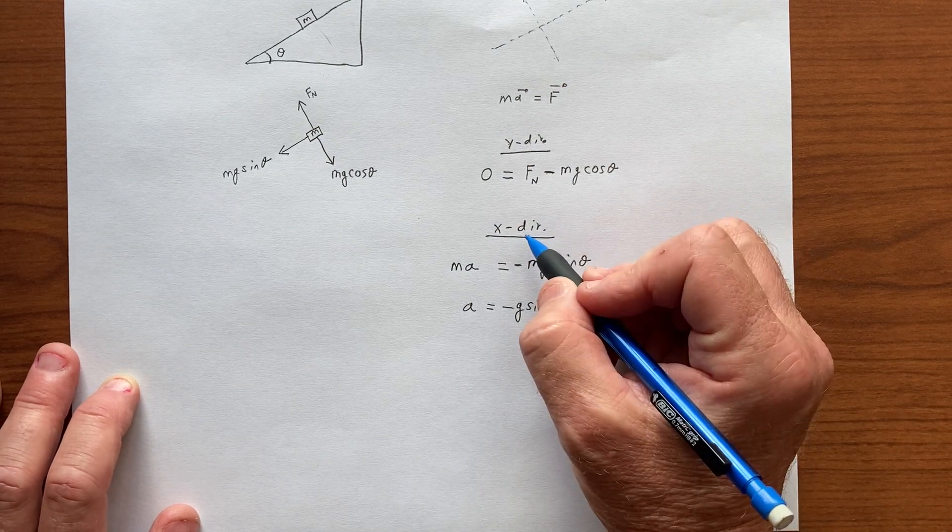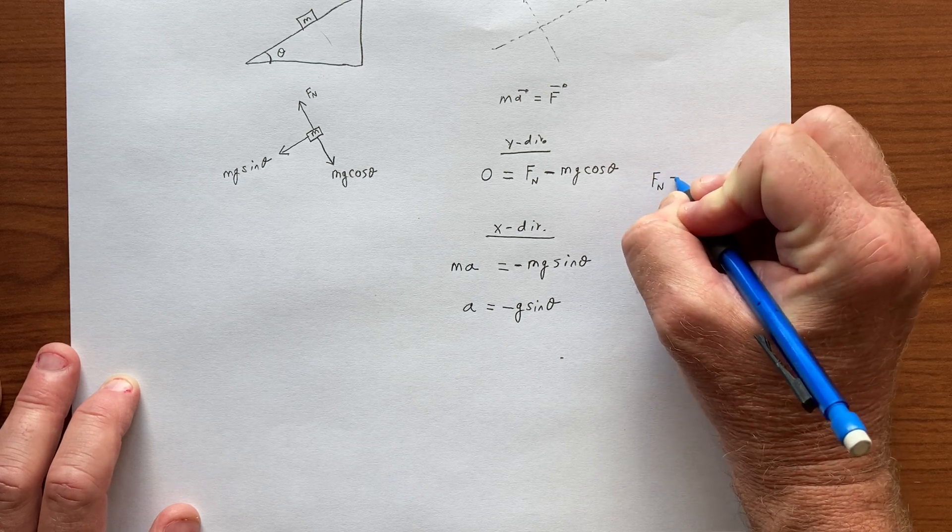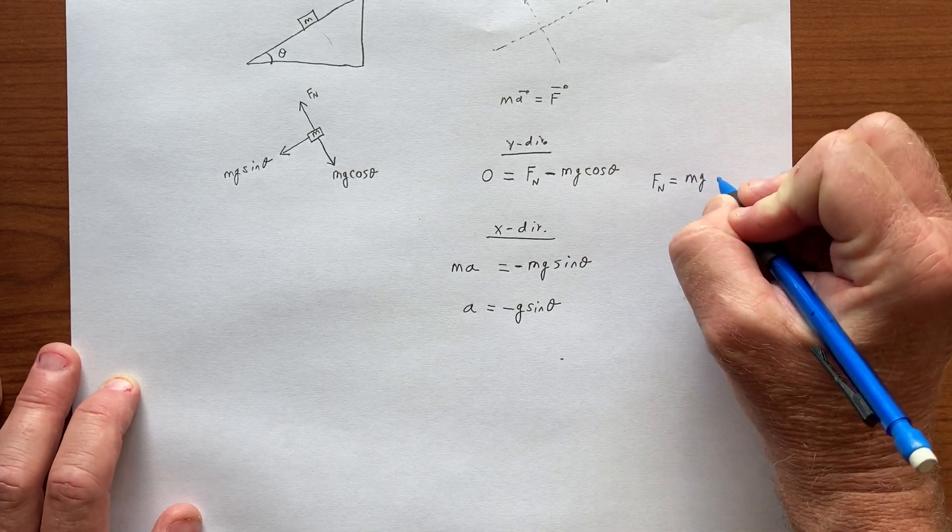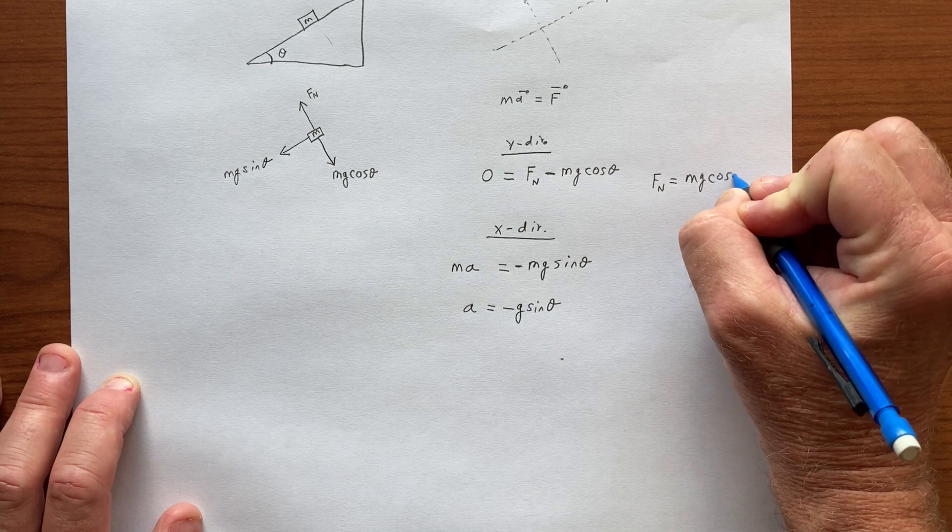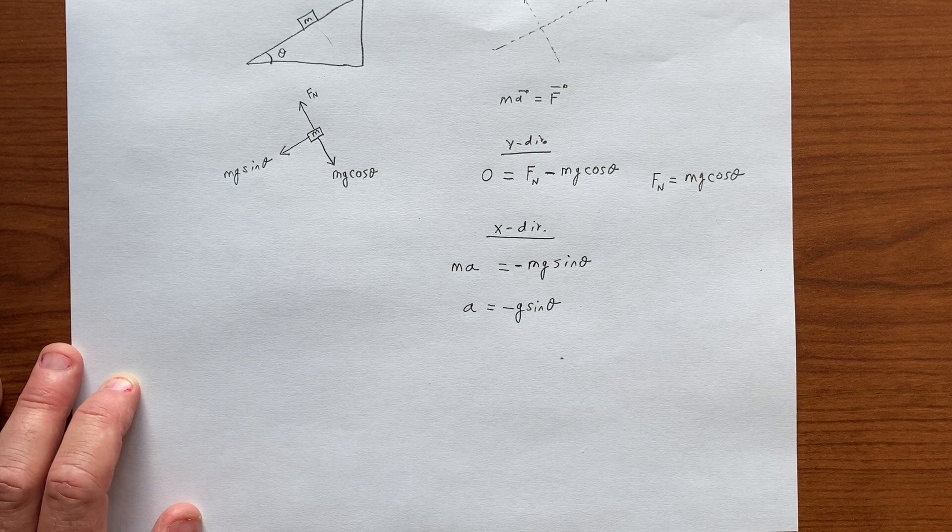So that's what this second equation gives us. And this one, of course, gives us the normal force, which doesn't seem to be necessary to figure out the way the object moves, and we'll see that that's not the case when we introduce friction.